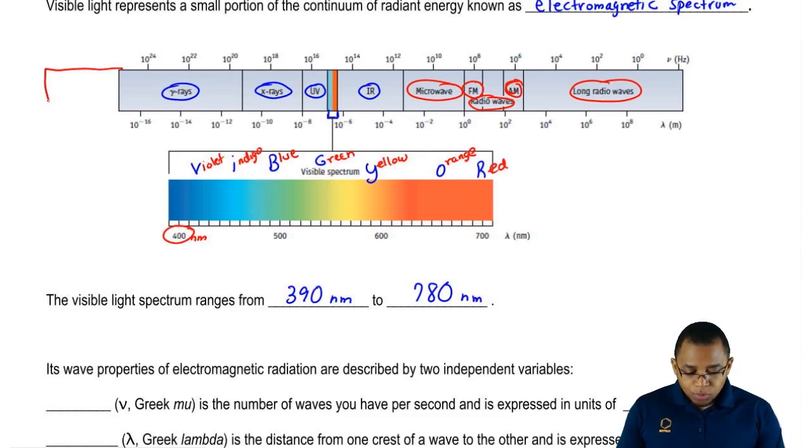There's also cosmic rays which are usually above gamma but professors usually ignore those.